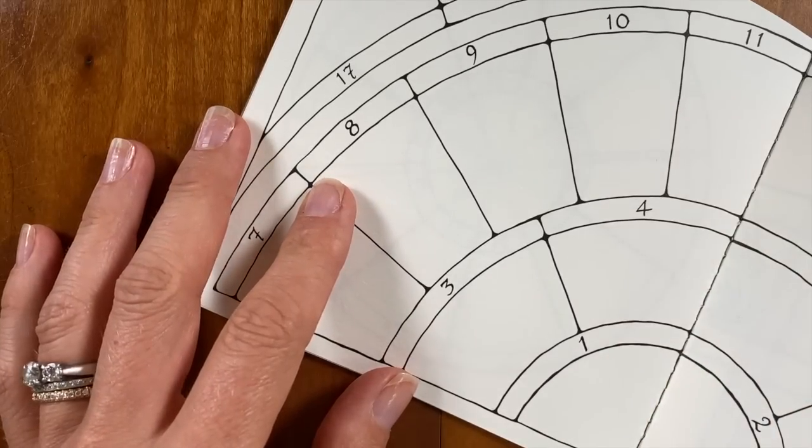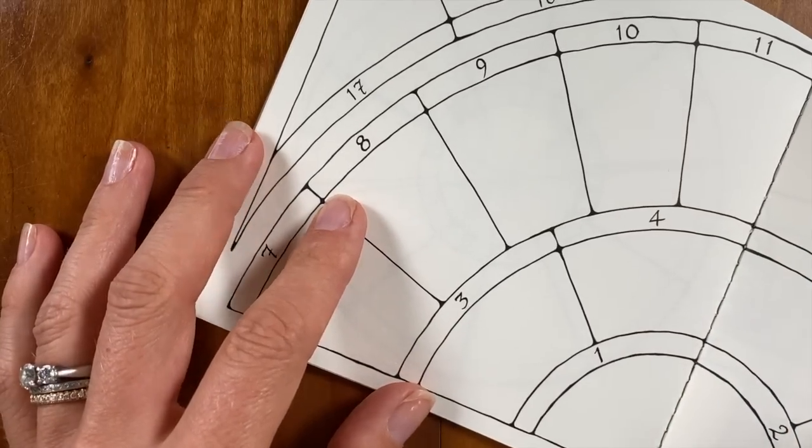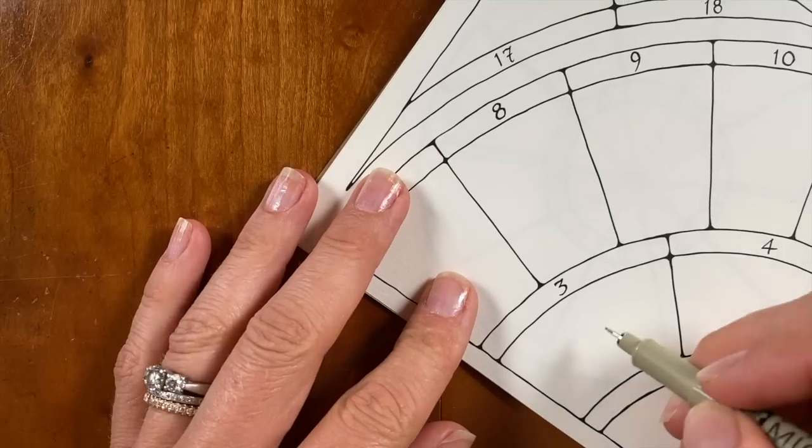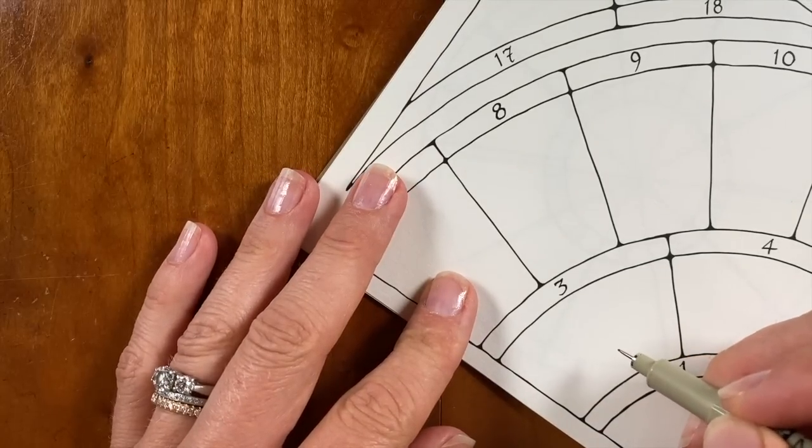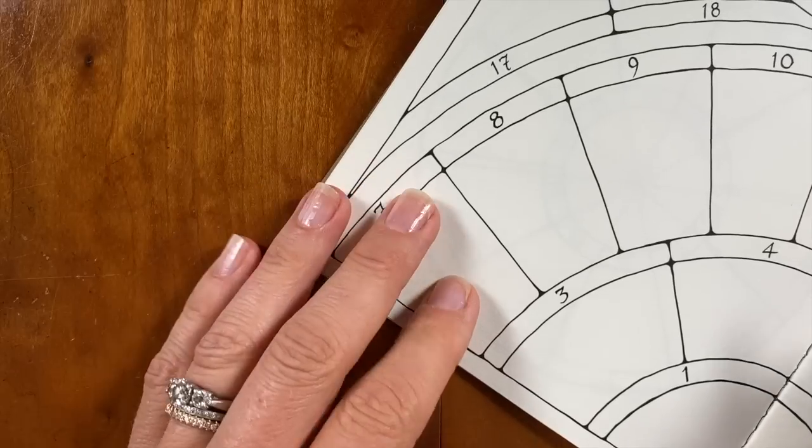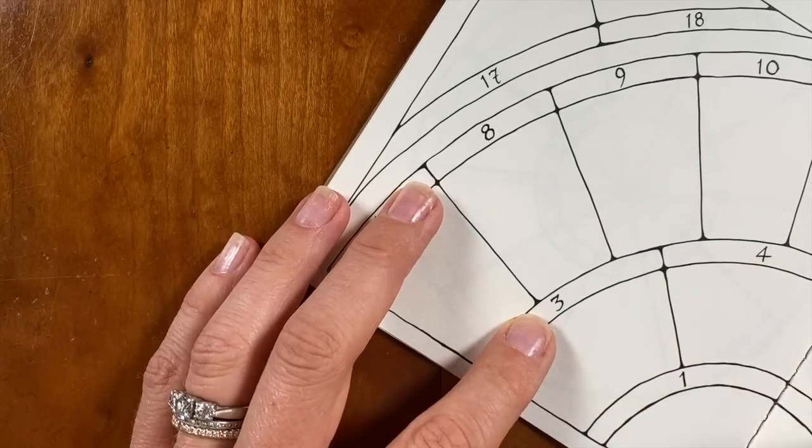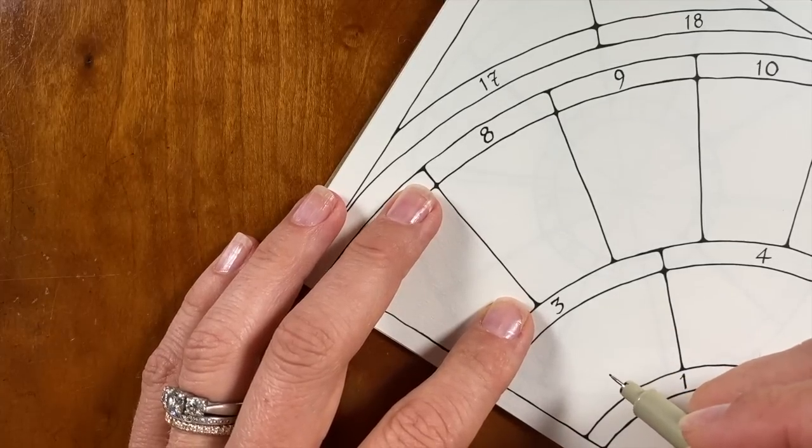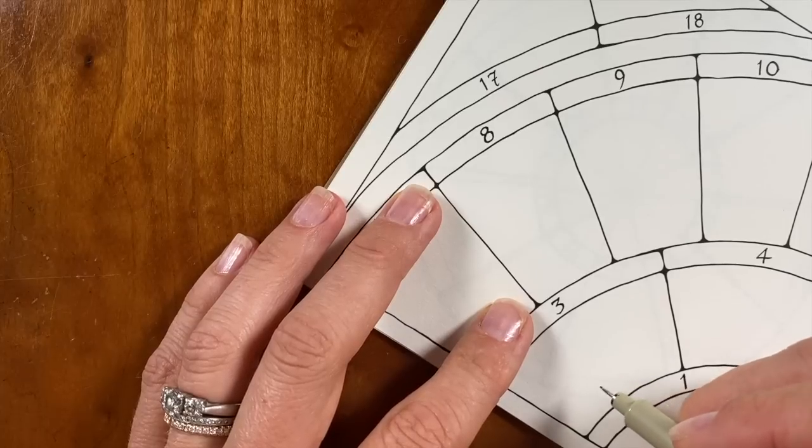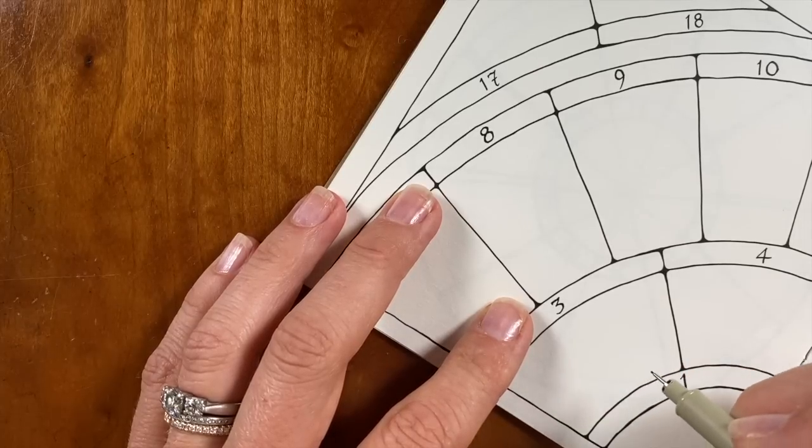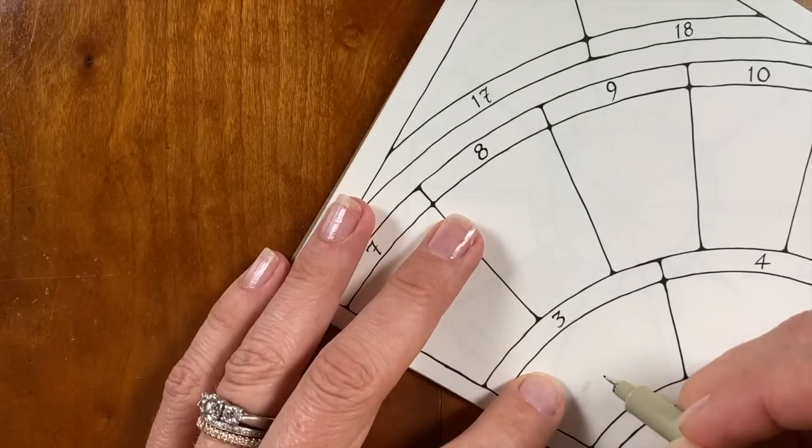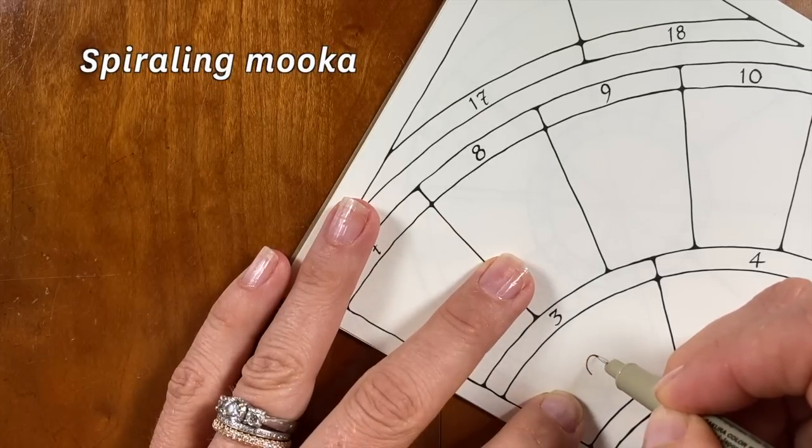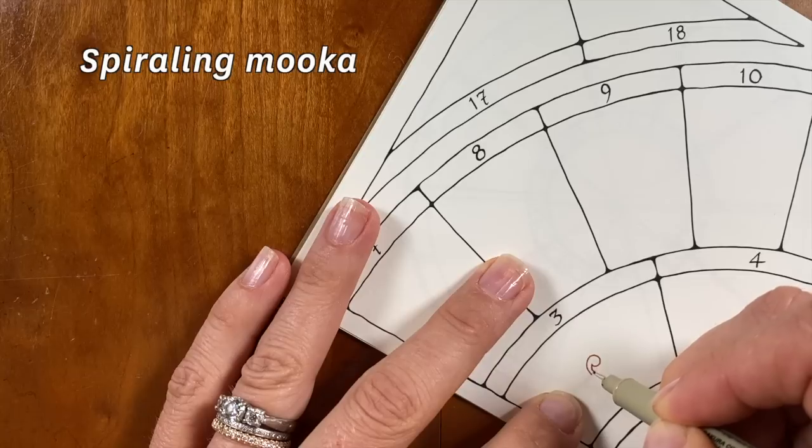Feel free to follow along or watch me first so you get the hang of it. I'm going to use this space number three and begin by creating a circle to build my spiral on. The circle is going to be made of four little Mooka shapes. I'm probably going to work in my spiral going clockwise but you can feel free to go counterclockwise.